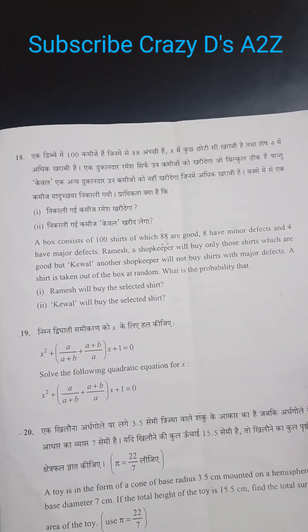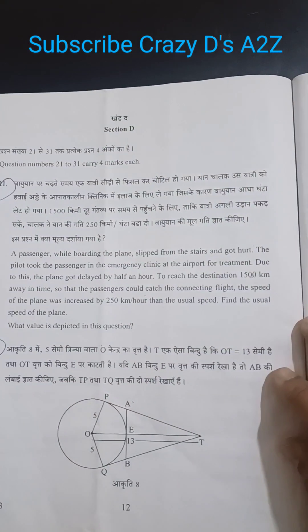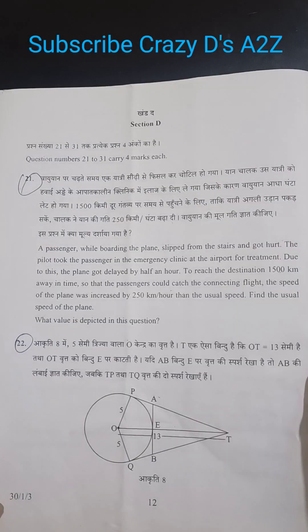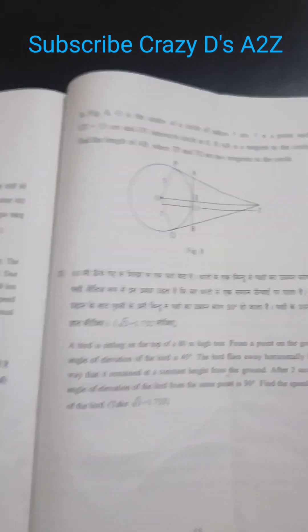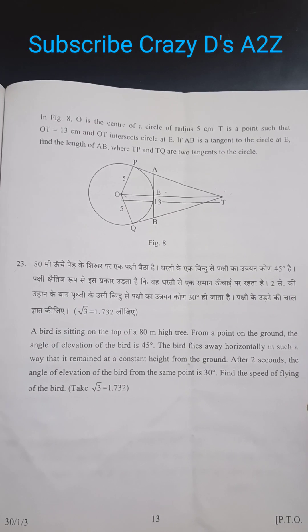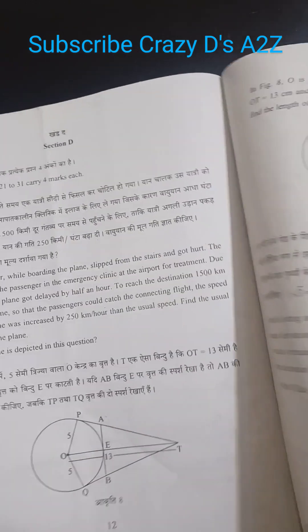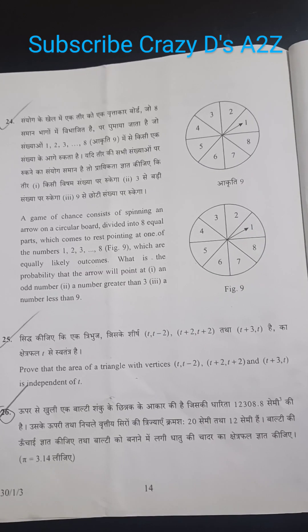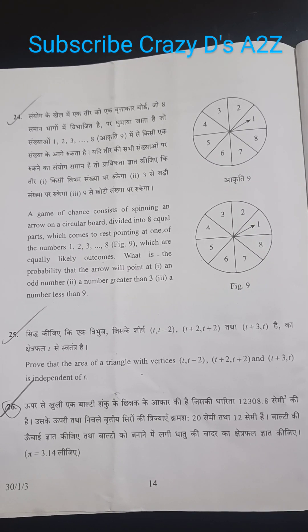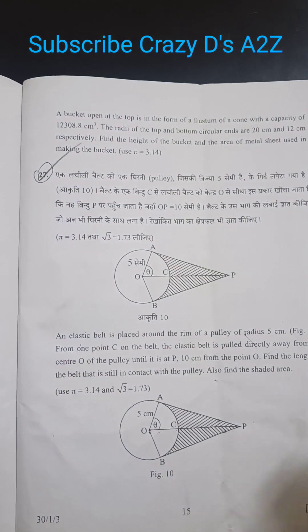Then comes question 18, 19, 20. This is the Section D part having question number 21, 22, and this is question 24, 25, and 26, and then comes question number 27.